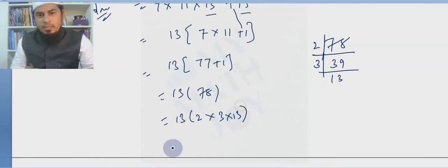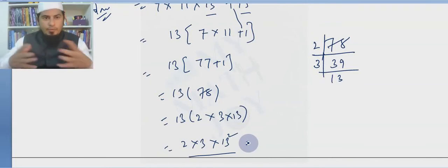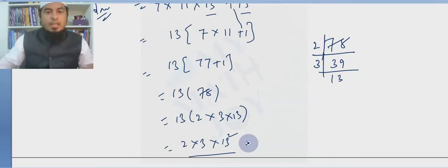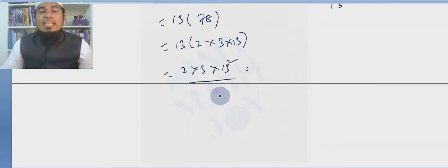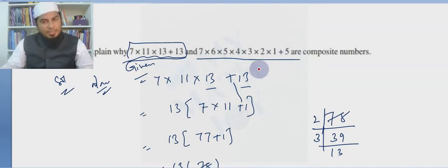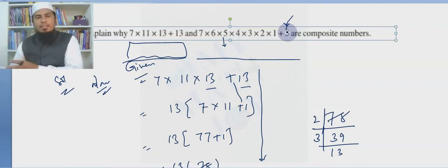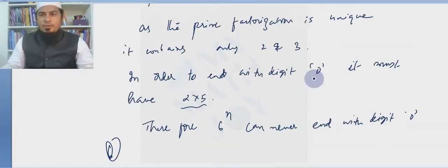So the full expression equals 13 times 2 times 3 times 13, which is 2 times 3 times 13 squared. The prime factorization of a prime number contains only itself, but here we have many prime factors: 2, 3, and 13 are all factors, along with 6, 39, and others. Hence the given number is a composite number. Similarly for the other part, you can take 5 as common and proceed the same way.